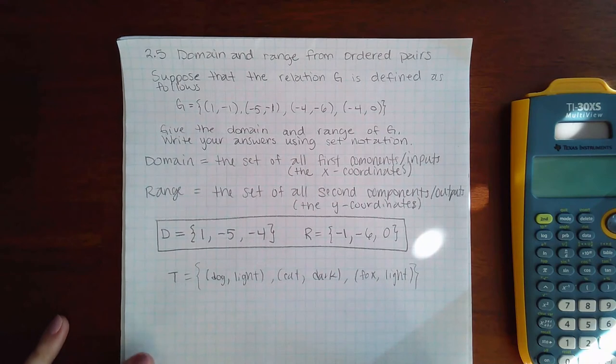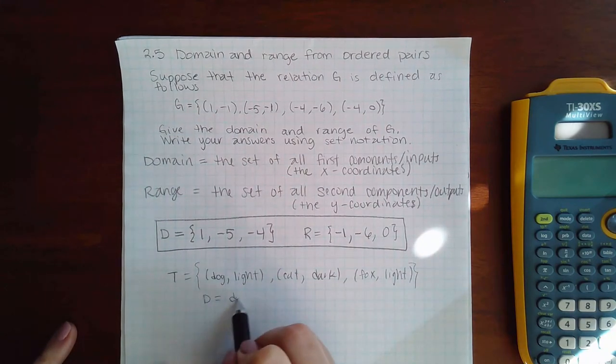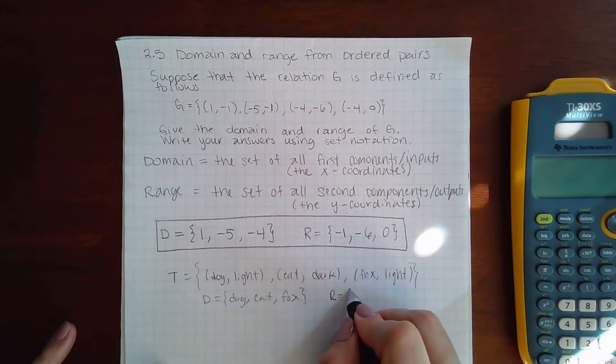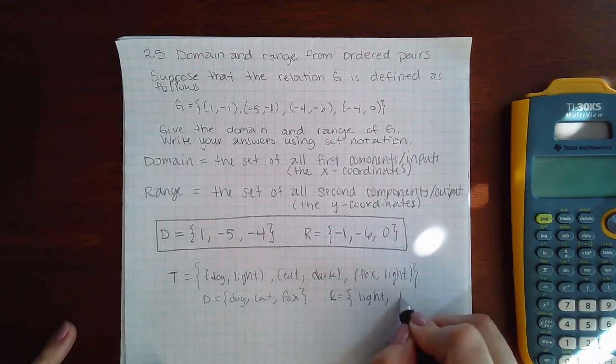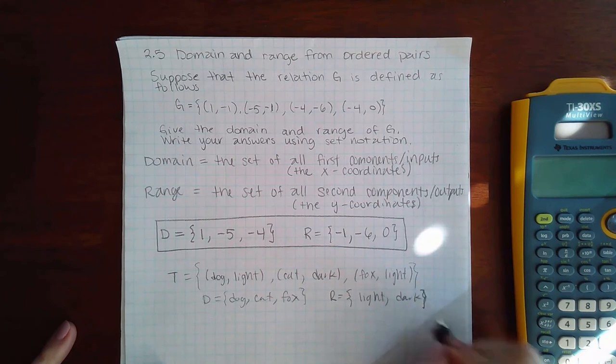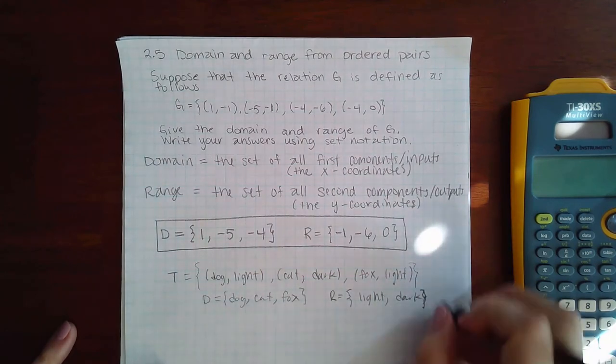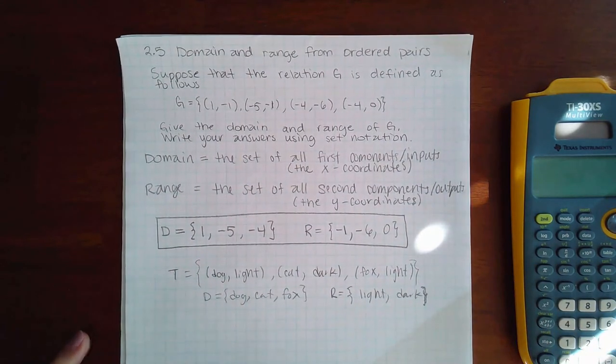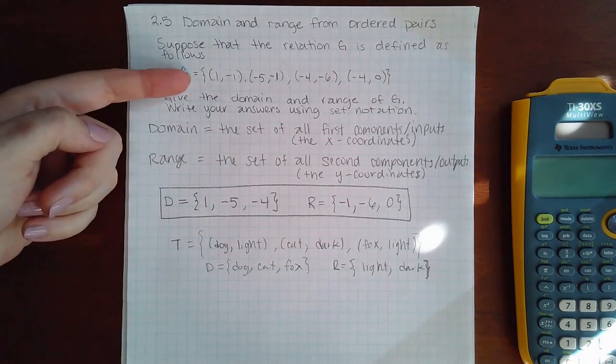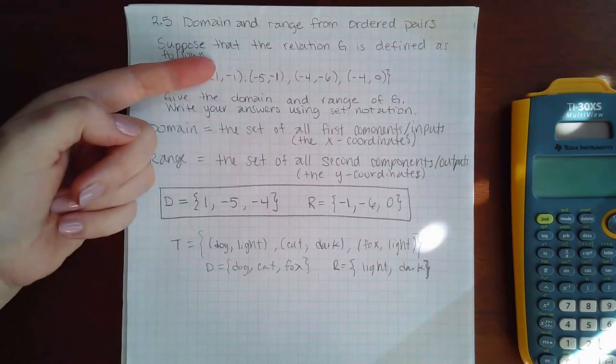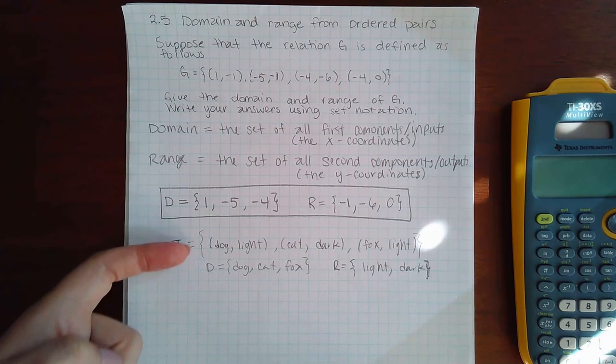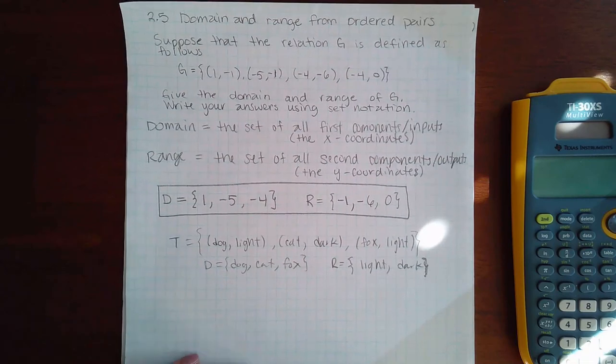If that's the case, the domain would be dog, cat, and fox, because those are all the first components. You don't need to list a component twice—it's already represented. I want you to understand that in the coordinate problem, the first components were X coordinates, but even if they give you an abstract relationship like this, you can still find the domain and range.